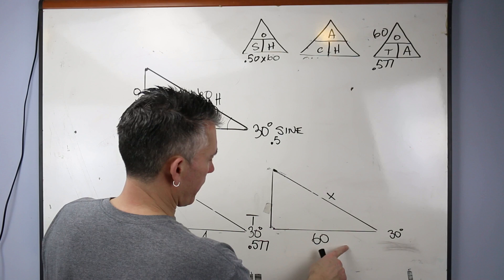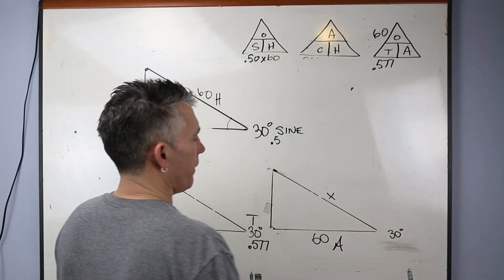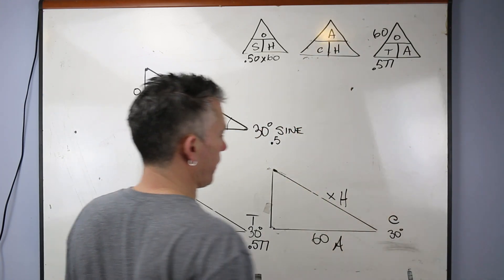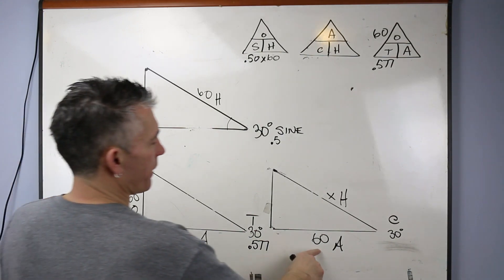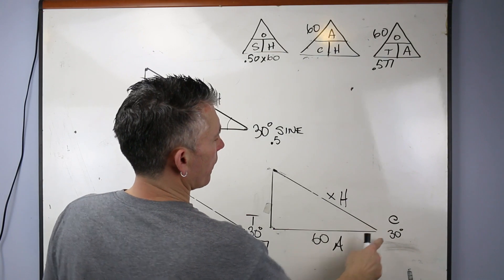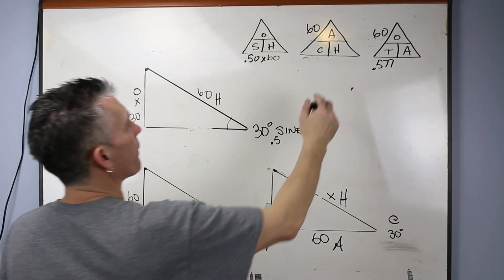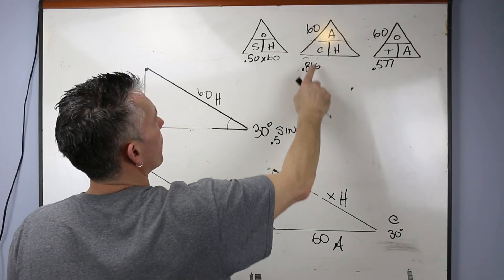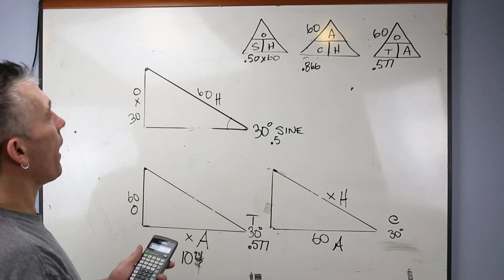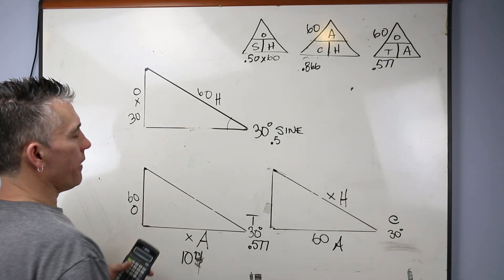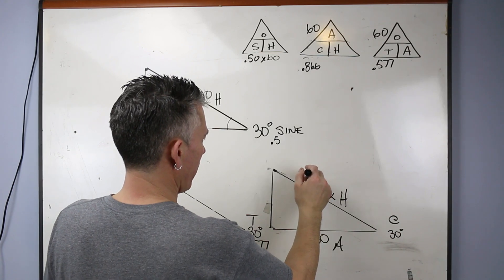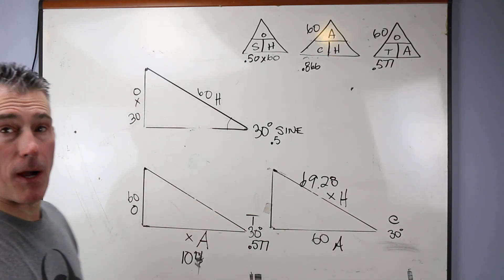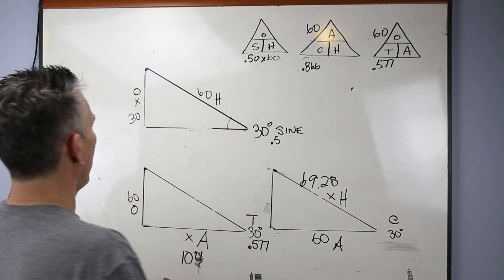Question: 60 on the bottom is adjacent, X is hypotenuse — A and H means cosine. 60 is A, 30 cos equals 0.866; divide: 60 divided by 0.866 equals 69.28. The hypotenuse is always the longest — that looks right. Next: X on the side is opposite, 75 is hypotenuse — O and H means sine. These are the practice questions. Keep going: 40 is opposite, 60 is adjacent — O and A means tangent. And 60 is hypotenuse, 40 is adjacent — A and H means cosine.